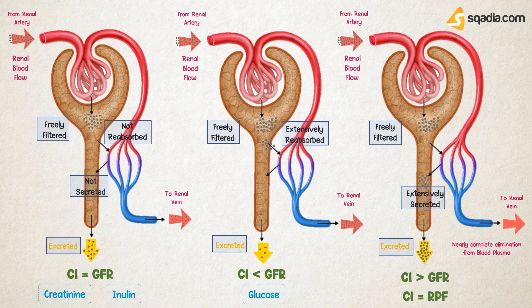An example of this situation is para-aminohippuric acid, which is an organic anion and is extensively secreted into the proximal tubule. However, this is only true at very low plasma concentrations of para-aminohippuric acid. So we can say that renal clearance can be used to characterize how a substance is being handled by the kidneys — either reabsorbed or secreted.